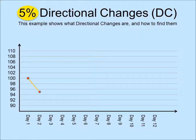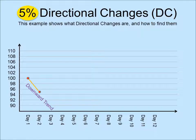Suppose on day 2 the price drops to 95. At this point, we conclude that we are in a downward trend. In a downward trend, we record the lowest price so far. The lowest price so far is 95. Suppose on day 3 the price goes up to 98. It is only 3% above 95, which is not a significant change according to our definition of 5%. We therefore still consider ourselves to be on a downward trend.